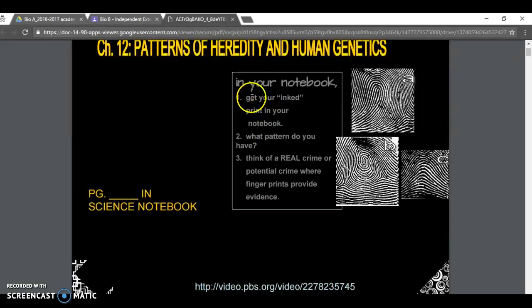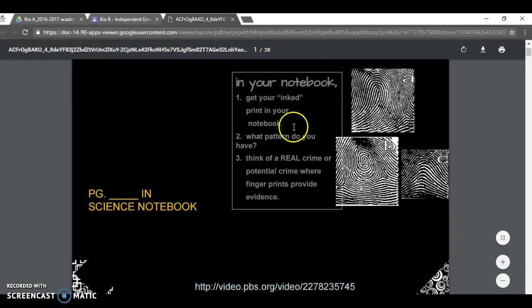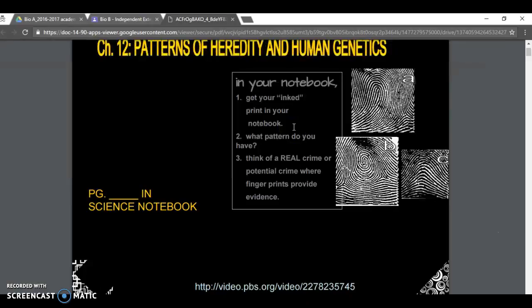It says get your inked print. You'd ask the teacher for an ink pad, get the ink on your thumb, and then with some scrap paper, you may not have a notebook, but if you have scrap paper or whatever you're writing notes on, you just put your fingerprint down.